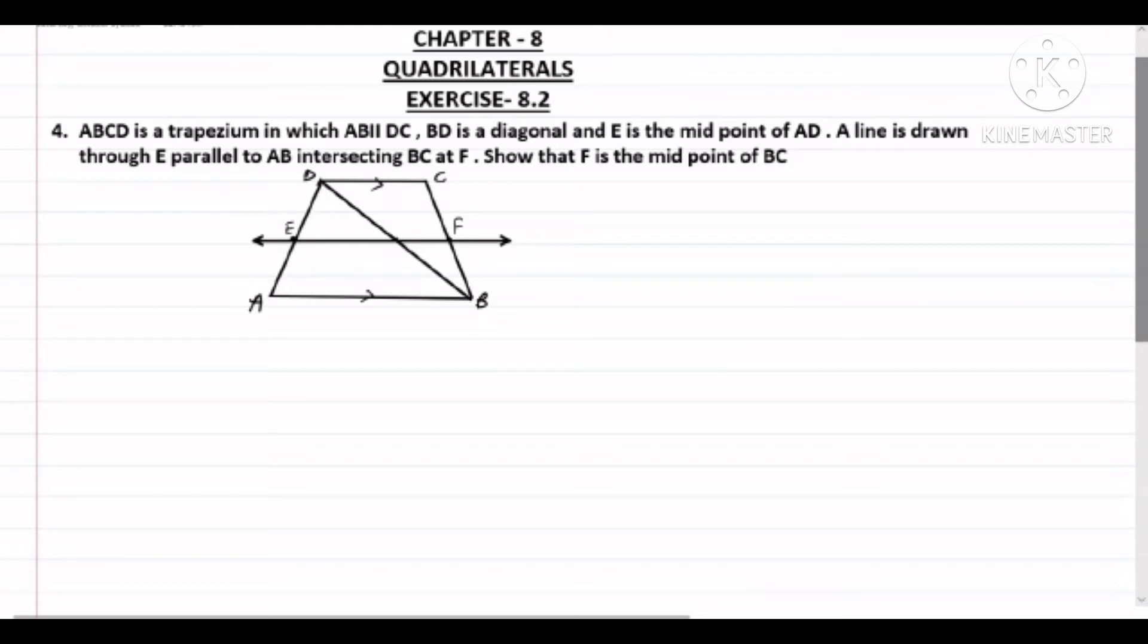So let's write what is given to us. We are given ABCD is a trapezium, AB is parallel to CD. Also, E is the midpoint of AD. And we need to prove that F is the midpoint of BC. So let's see the proof.